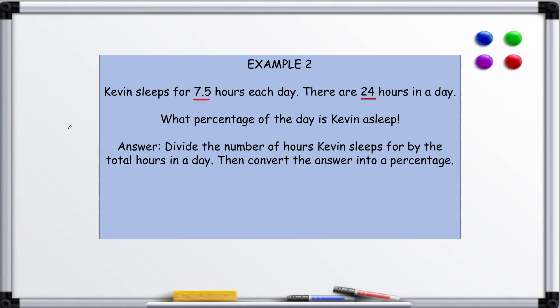So 7.5 divided by 24, and we get 0.3125.